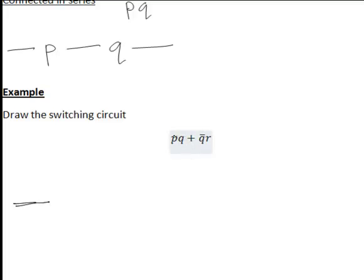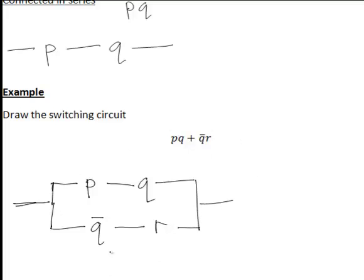The first bit here says PQ, and you'll notice that's plus Q bar R. So the block of switches PQ will be connected in parallel, due to the plus, with the block of switches Q bar R. Whereas in turn PQ, because that's multiplied there, that's connected in series, so those will be drawn like this. And similarly, Q bar R is also clearly connected in series, so the whole circuit would be drawn in this manner.